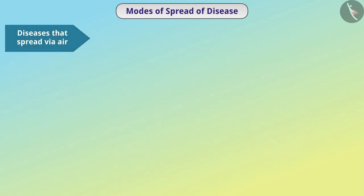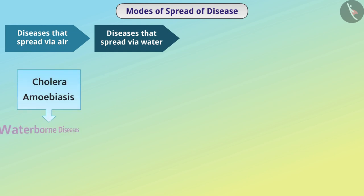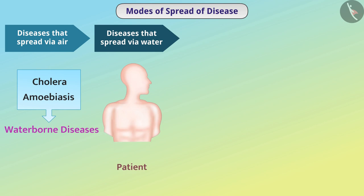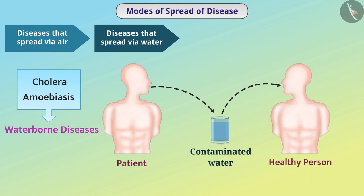Similarly, some diseases spread through water and are therefore called water-borne diseases. If the excreta of a person suffering from cholera is mixed with drinking water, and another person drinks that contaminated water, the microorganism enters the healthy person and he also suffers from the disease. Such diseases are caused due to unavailability of clean water.